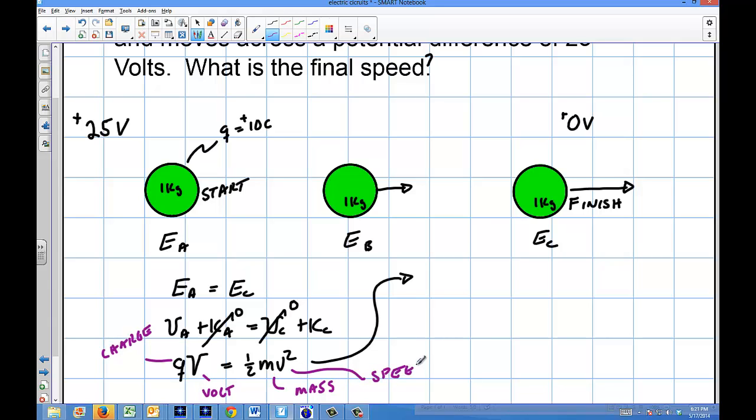So I'm going to go ahead and solve for the little speed there. I'm going to multiply it across, so I'm going to say that v squared is going to equal 2QV over m. So I'm going to flip those charges out, I'm going to take the square root, so v is going to be the square root of 2QV over m.